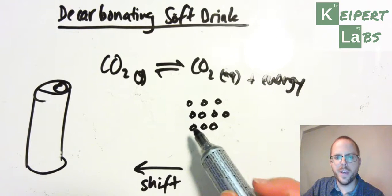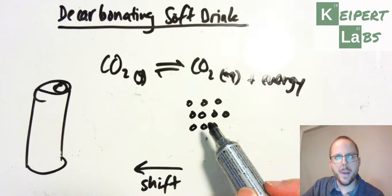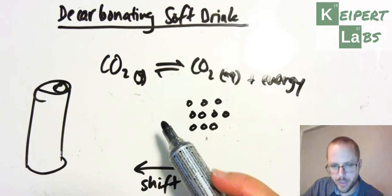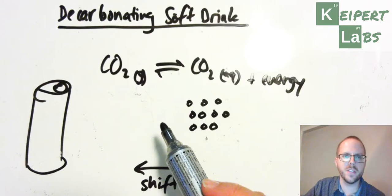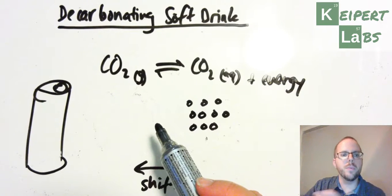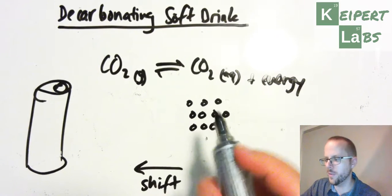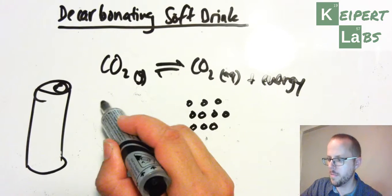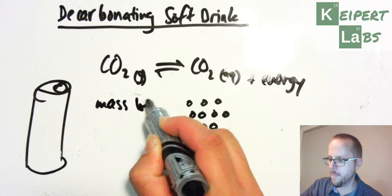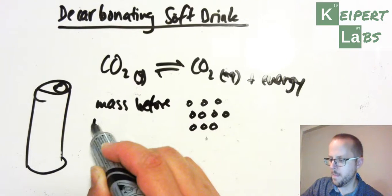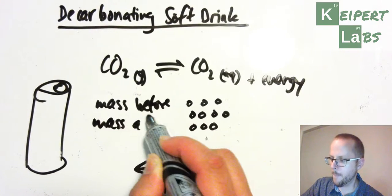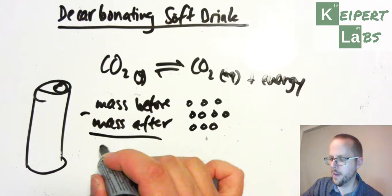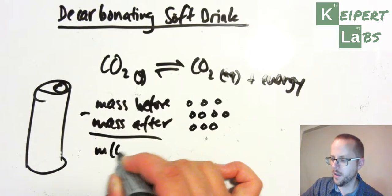So what we're doing here is that we're trying to force this process to happen. We're using Le Chatelier's principle by decreasing the amount of gas, carbon dioxide, to remove it from the soft drink, and then what we can do is that we can measure the mass before and after, so we can do mass before, mass after, and so then we can work out then the mass of CO2.